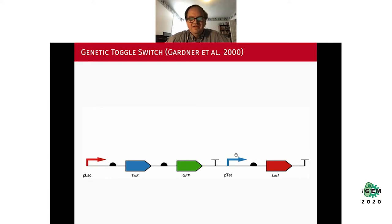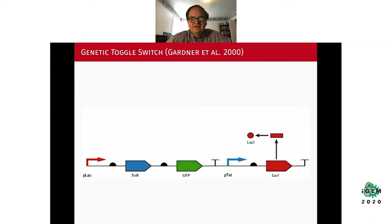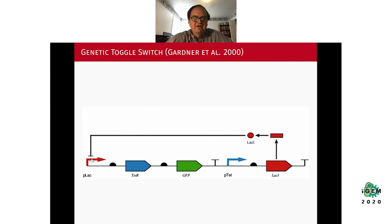When transcription begins at the pTet promoter, it gets transcribed into a messenger RNA for LacI, which gets translated into the LacI protein. The LacI protein binds to the pLac promoter and represses it, preventing further transcription of the TetR and GFP genes. This is what we call the off state of the genetic toggle switch — the E. coli cells containing the circuit will not be glowing green at this moment.